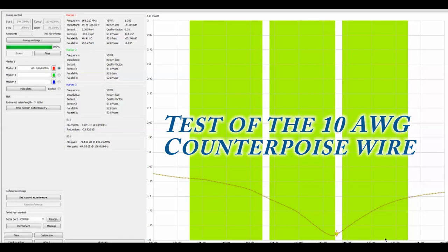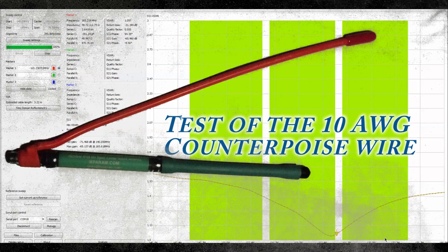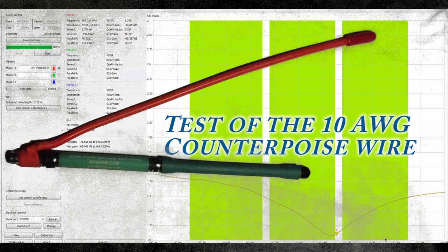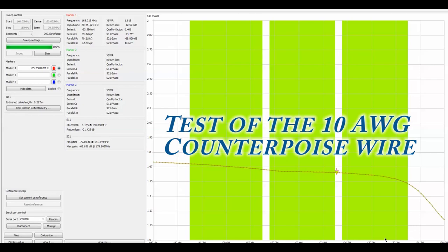Now, what we're looking at is the 10 AWG counterpoise wire on that same 165 IPX antenna, and we're looking at a standing wave of 1.056, which is an improvement over the 12 gauge wire. And now, let's just drop it down and see what it resorts to. Because it's a thicker wire, it doesn't droop quite as much, but you can see here that we're back up to about 1.6.